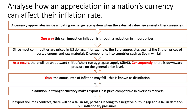In addition, a stronger currency also makes exports less price competitive in overseas markets. If export volumes contract, there will be a fall in aggregate demand, perhaps leading to a negative output gap and a fall in demand-pull inflationary pressures. So this answer is all about how a strong currency can affect both aggregate supply and aggregate demand.